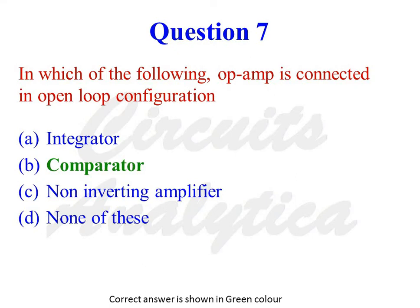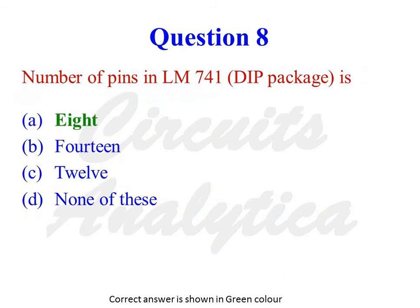In which of the following is the operational amplifier connected in open loop configuration? The options are: integrator, comparator, non-inverting amplifier, or none of these. The correct answer is comparator. In an integrator and non-inverting amplifier, the op-amp is connected in closed loop configuration — there is feedback between the output and the inverting input. The number of pins in the LM741 DIP package is 8.